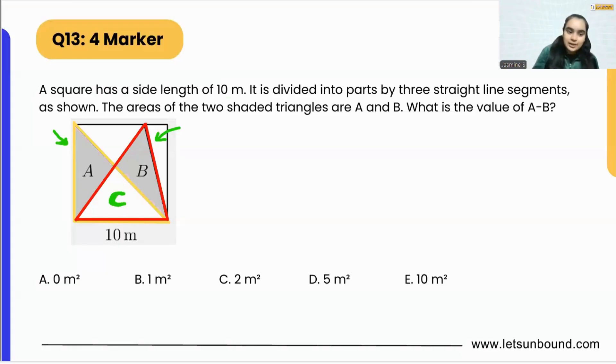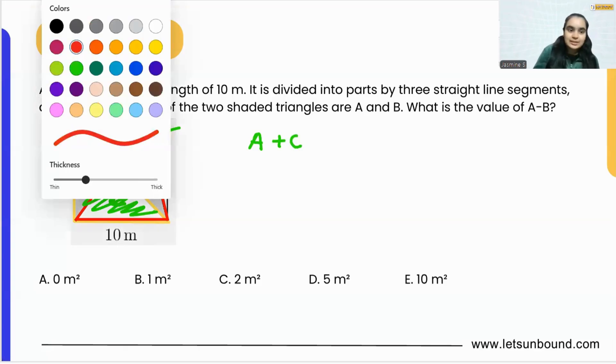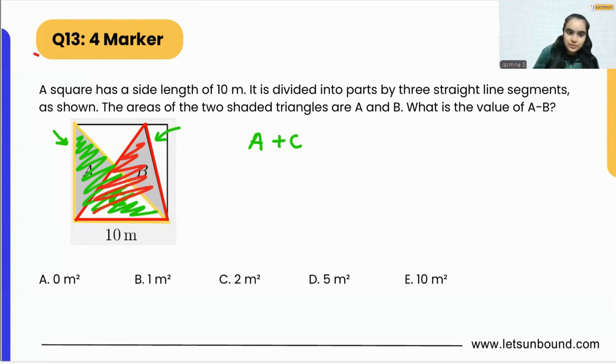Now if you focus on this yellow triangle, the area of the yellow triangle will be A plus C, correct? And the area of the red triangle, which is this part, is going to be B plus C.